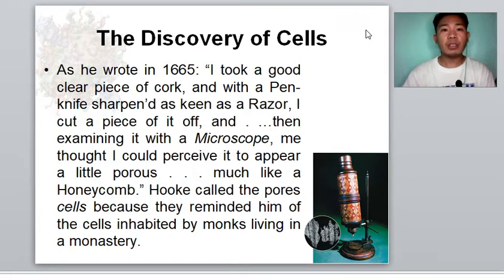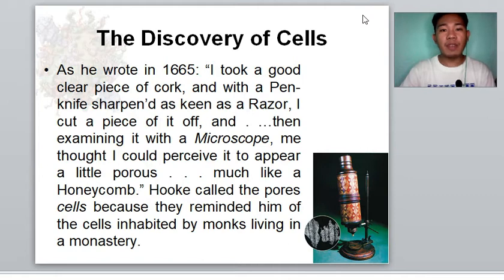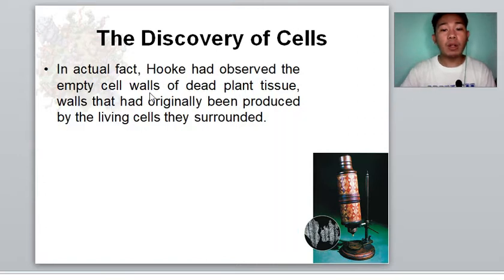One of the many questions Hooke attempted to answer was why stoppers made of cork, which is part of the bark of trees, were so well suited to holding air in a bottle. As Hooke observed the empty spaces, he called the pores 'cells' because they reminded him of the cells inhabited by monks living in a monastery. In actual fact, Hooke had observed the empty cell walls of dead plant tissue — the walls that had originally been produced by the living cells they surrounded.